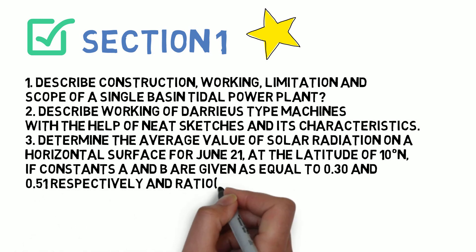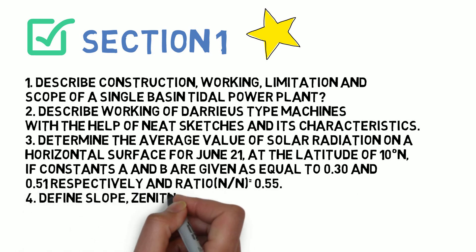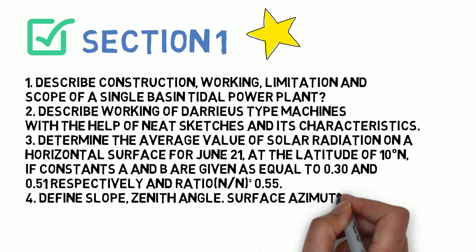Next is define slope, zenith angle, and surface azimuth angle, air mass. You need to define these and this particular question can nearly come for five marks. So totally four questions for Section 1. Let's go to Section 2.